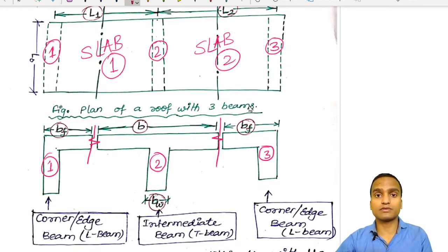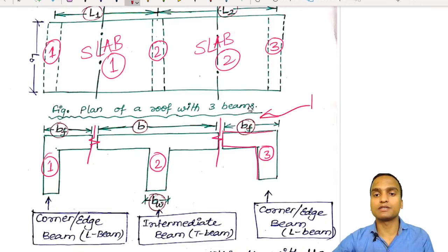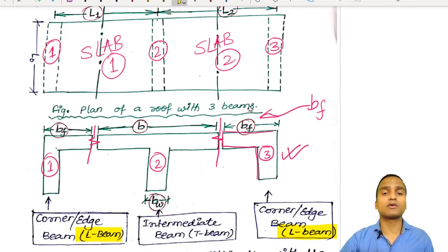Since there is monolithic construction, there will be some contribution from the slab to the strength of the beam. We have taken a length Bf as the contribution from the slab, which makes our beam an L-beam. What this length Bf is, how it is taken, and what the specifications are as per the IS code — we will also discuss that. The corner or edge beam is called an L-beam.